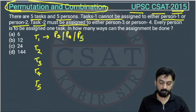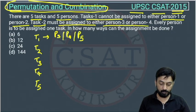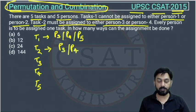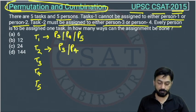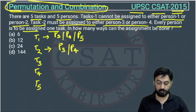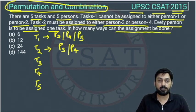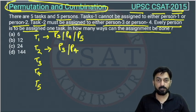Task two must be assigned to either person three or person four — it cannot be assigned to any other person. Every person is to be assigned one task. So, in how many ways can the assignment be done? This is a question from Permutation and Combination.